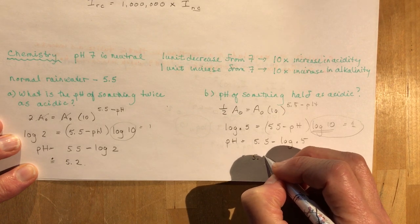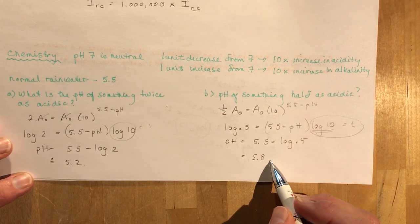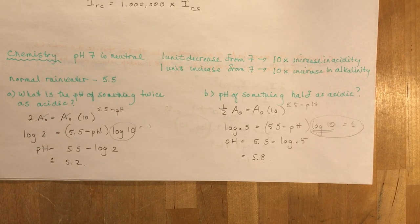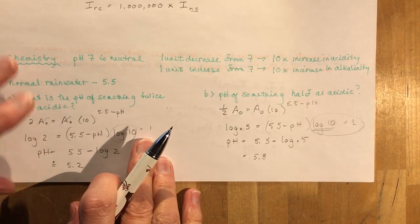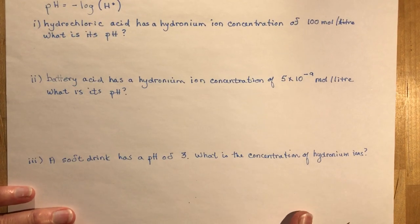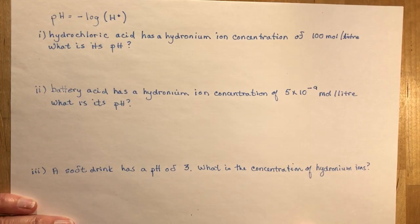So half as acidic means it's more alkaline, which means the number will be bigger. I know, it's kind of confusing. Probably if you've taken chemistry, this is all like, oh yeah, this is so easy. I'm not a chemist.